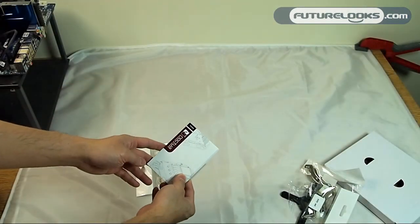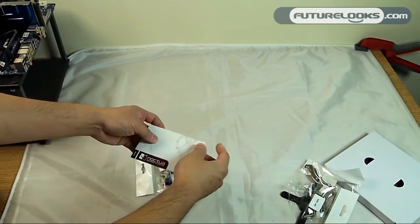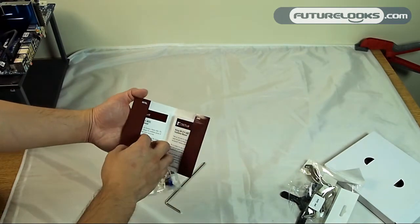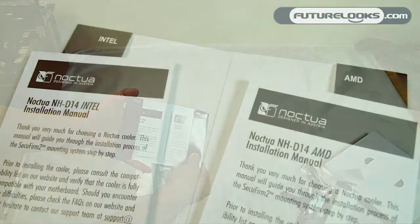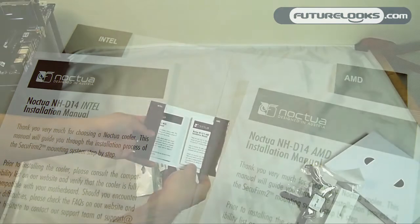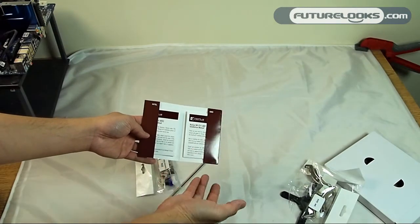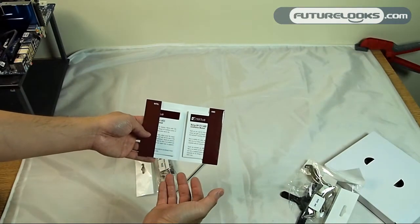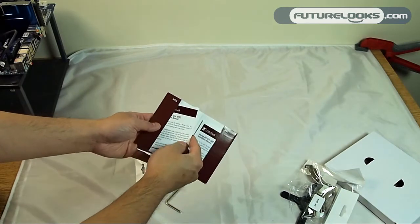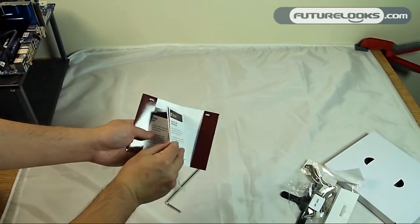Of course, an instruction manual is included. And the very cool thing about this manual is the fact that there's both an Intel side and an AMD side. So instead of using one single sheet of instructions, they've actually made it very easy for people to follow along based on their socket type. So if you have an Intel, you pull out the Intel side. If you have an AMD, you pull out the AMD side.